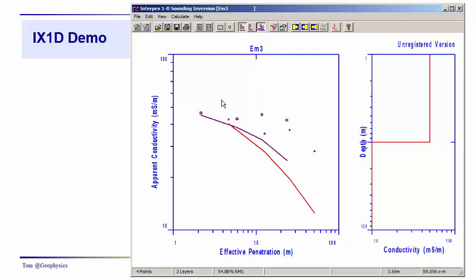We're taking a look at a sounding that you're already familiar with. We have sounding number three. And these are the horizontal dipole observations. These are the vertical dipole observations.